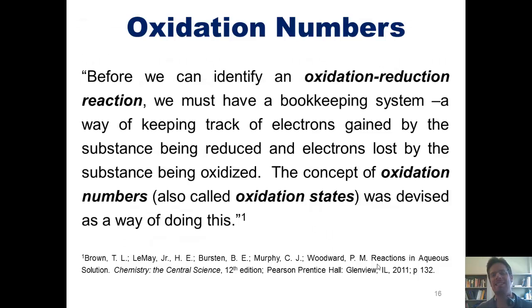And before we can identify an oxidation reduction reaction, we must have a bookkeeping system of some kind, a way of keeping track of electrons gained by the substance being reduced and electrons being lost by the substance that is oxidized. The concept of oxidation numbers, which are also called oxidation states, was devised as a way of doing this.